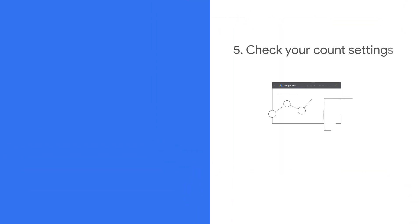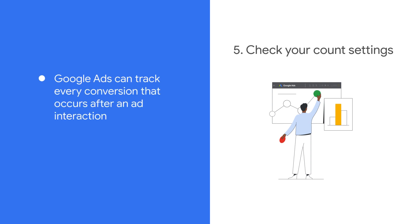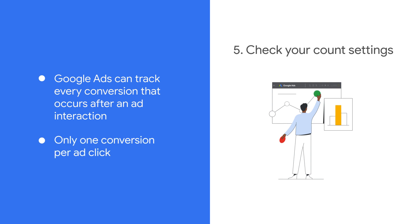Check your conversion counting settings. Google Ads can track every conversion that occurs after an ad interaction, or only one conversion per ad click.